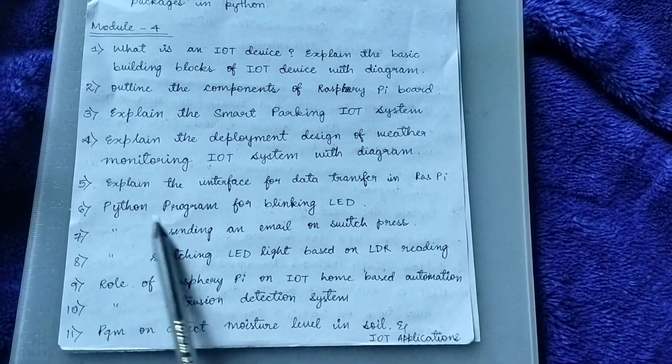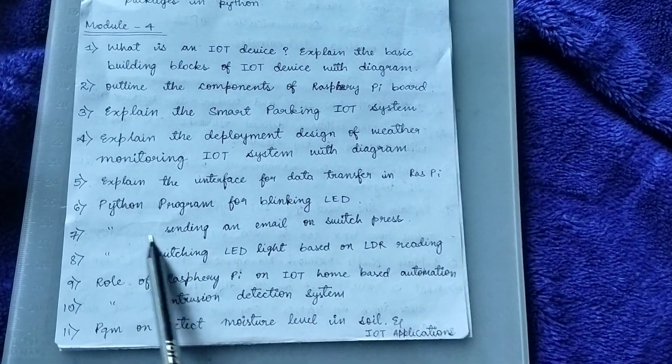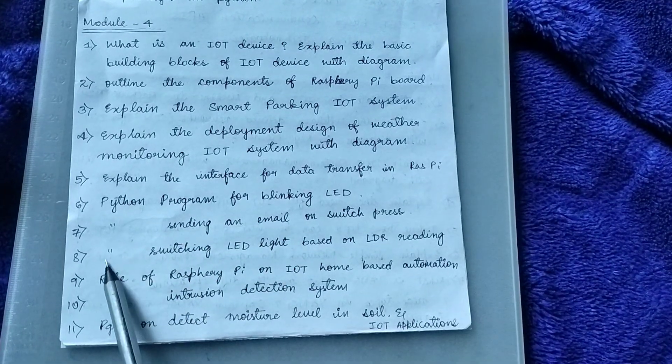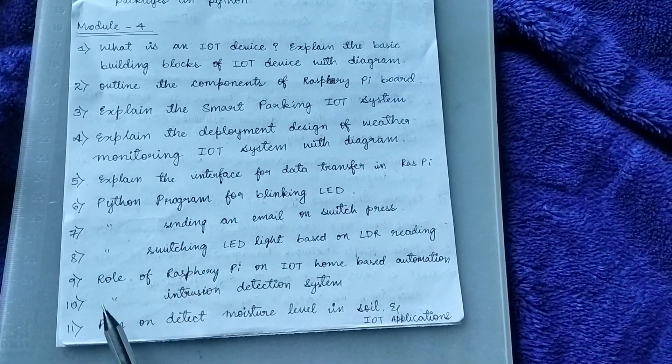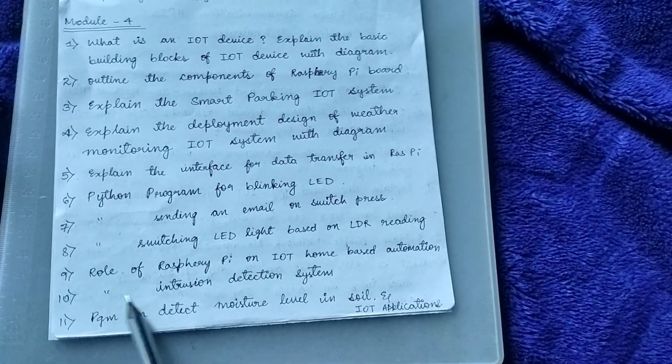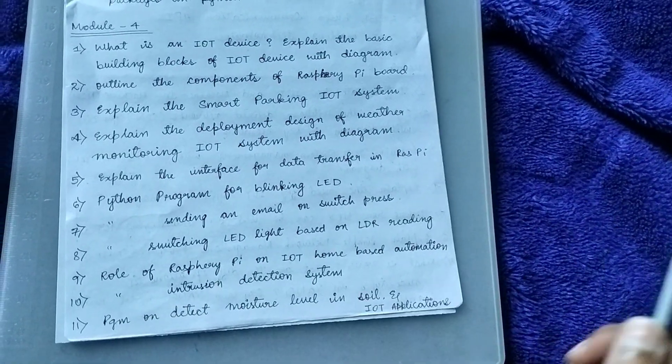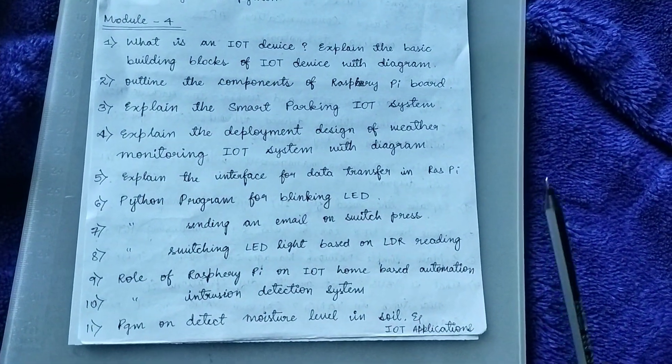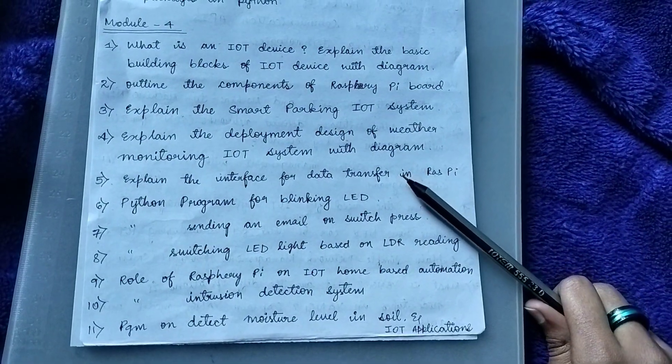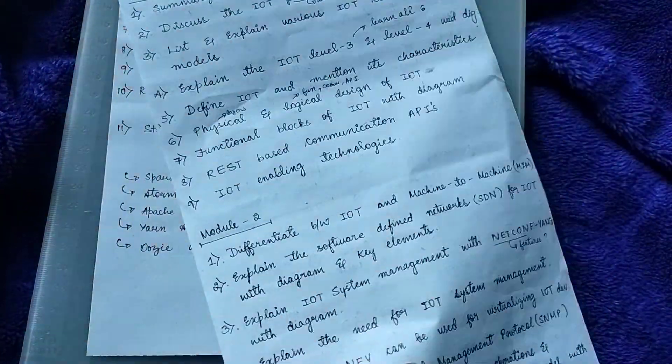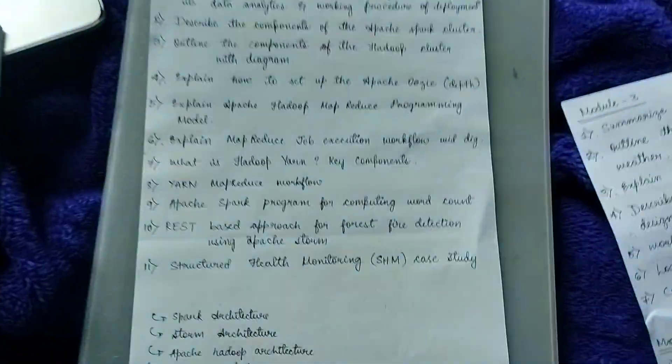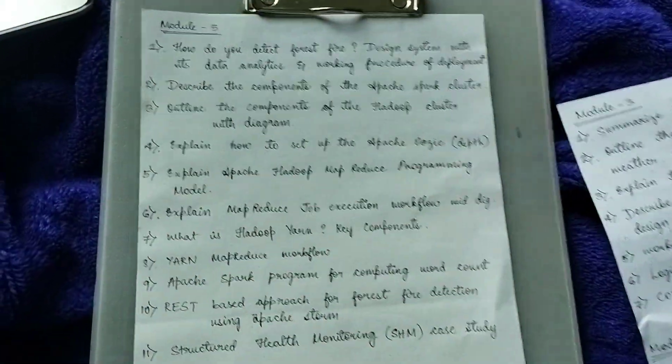This symbol means again Python program. Same write a Python program for sending an email, write a Python program for switching LED, and then role of Raspberry Pi. Again role, I mean intrusion detection system, explain something like that. So here, yeah, this is it. Only 11 questions, 11 freaking questions. So this is fifth module.